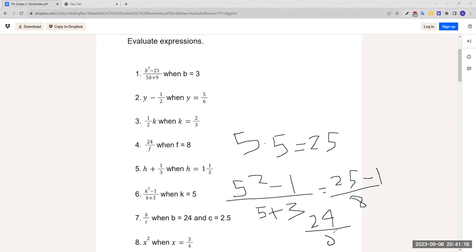24 over 8. If we divide both sides by the same thing, we can simplify it and get 3 over 1. We can ignore this because anything over 1 is just the answer. So our answer is 3.